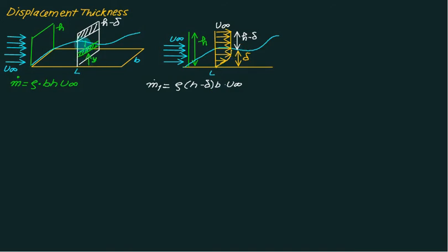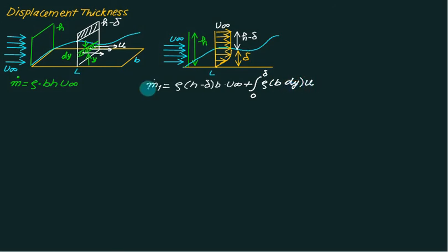To calculate the mass flow rate in the variable-velocity region of the boundary layer, consider an element of thickness dy at distance y from the wall. The area of this element is b times dy, and the local velocity is u, a function of y and delta. Integrating this gives the mass flow rate through the boundary layer. Without the plate, mass flow rate over height h is rho times b times h times u-infinity.